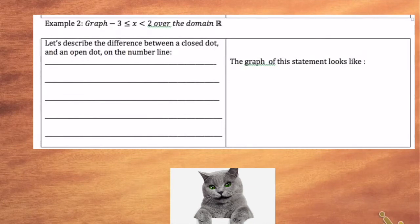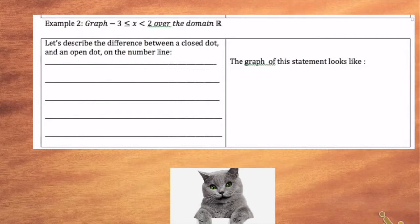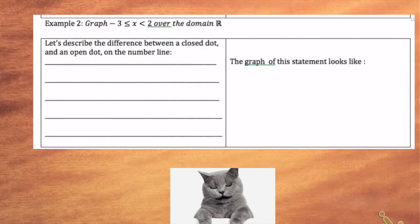In example 2, we're looking at graphing negative 3 is less than or equal to x, which is less than 2, over the domain of all real numbers. So we've got a combination of inequalities, and we're looking at all real numbers. We want all values of x that are greater than or equal to negative 3 and less than 2 — it has to comply with both pieces.